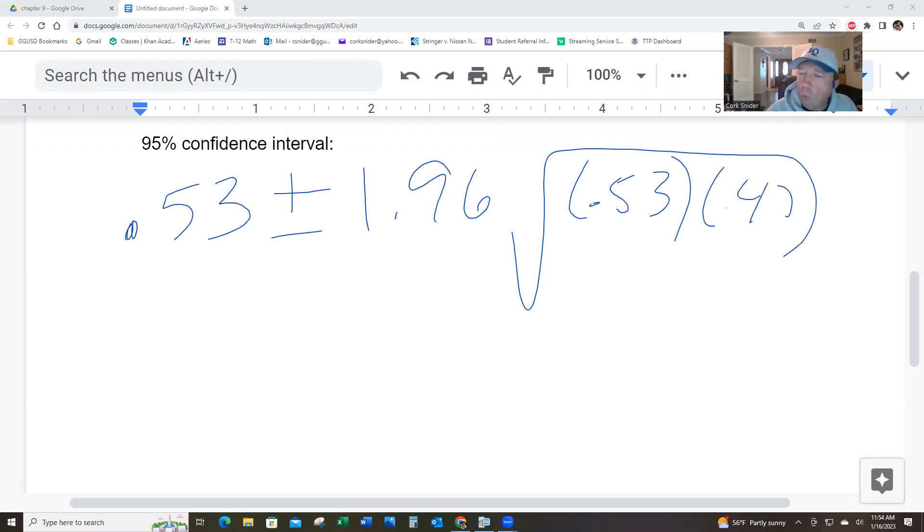0.47 over 1,500. Confidence intervals make no assumptions, just take the facts. So, it will use P-hat.